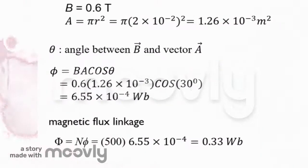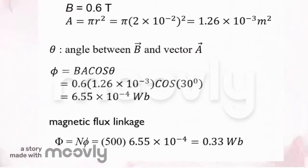It's given that magnetic field B is 0.6 Tesla. Area can be calculated with pi r squared, so pi times 2 centimeters squared gives you 1.26 times 10 to the negative 3 meters squared. The angle between vector B and vector A is 30 degrees. So using BA cos theta: 0.6 times 1.26 times 10 to the negative 3 times cos 30 equals 6.55 times 10 to the negative 4 Weber. The magnetic flux linkage is just 500 times that, which gives you 0.33 Weber.